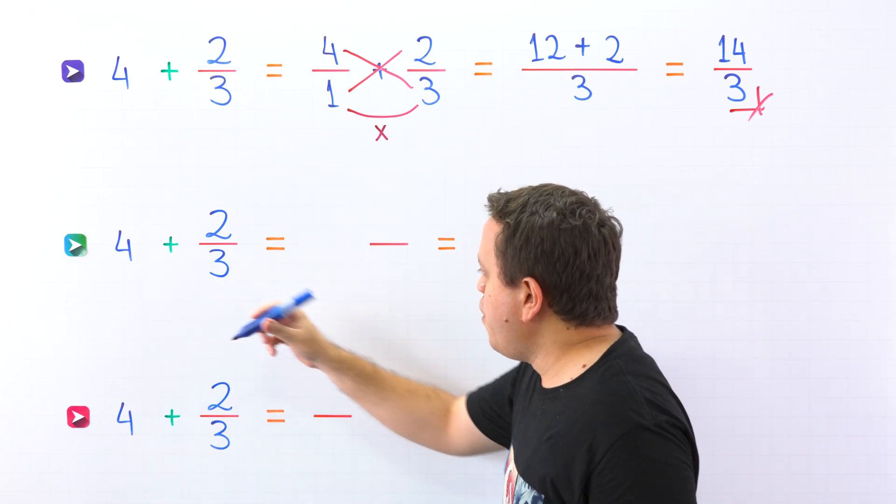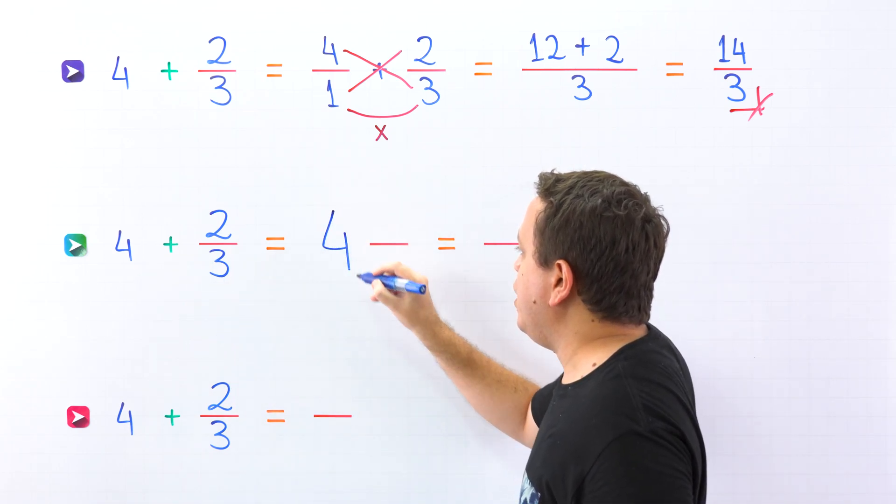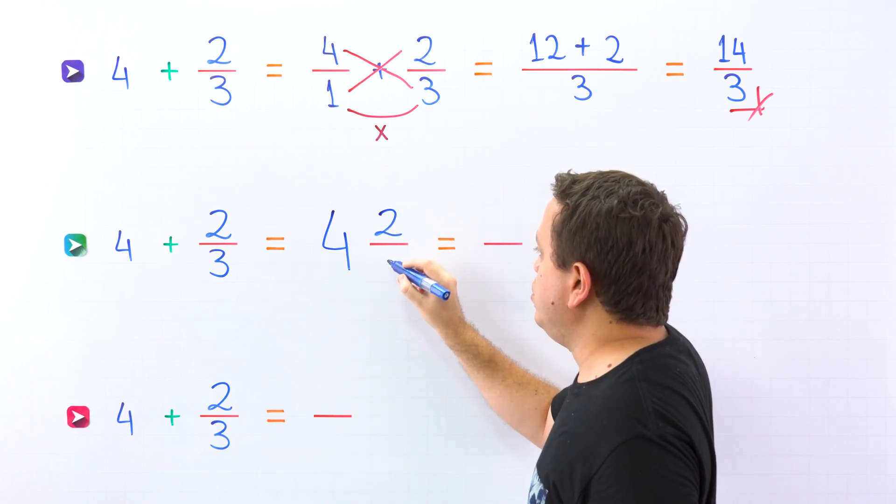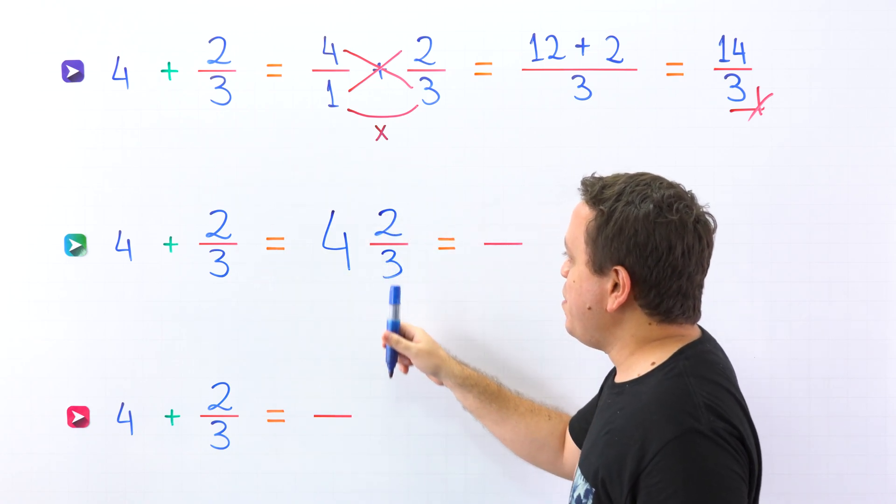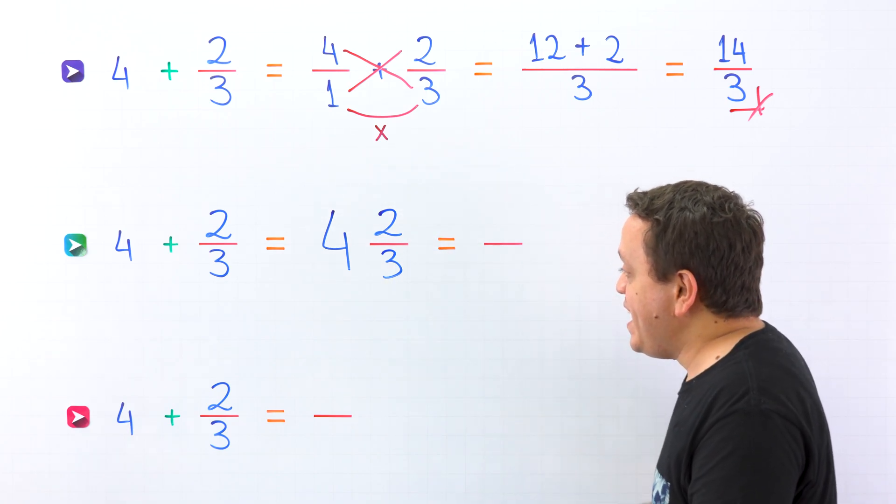Here we have 4 wholes, so we put 4 over here, and the proper fraction is 2 thirds. This is the mixed number 4 and 2 thirds.